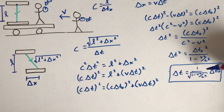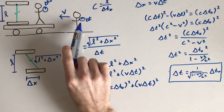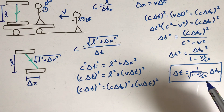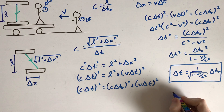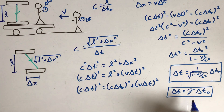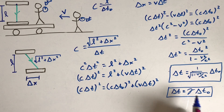This equation gives the time interval between two events as measured by the ground observer compared to the train observer, as a function of their relative speed v. The factor 1/√(1 − v²/c²) is referred to by physicists as gamma, because it comes up so often. This is the factor by which time dilation occurs, and it will also be important when we discuss length contraction.